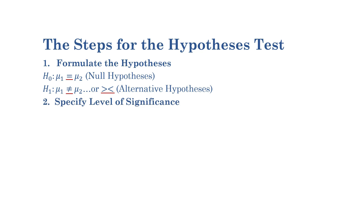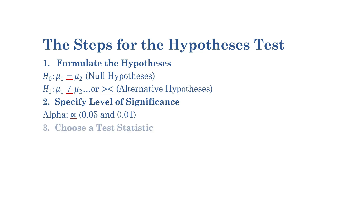Number two: specify level of significance. This is denoted by alpha and represents the probability of rejecting the null hypothesis when it is actually true. Commonly used significance levels are 0.05 and 0.01. Number three: choose a test statistic. The choice of test statistic depends on the type of data and the hypothesis being tested.